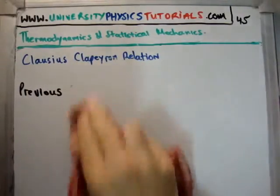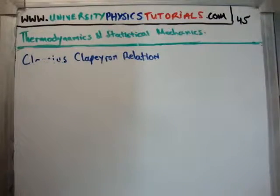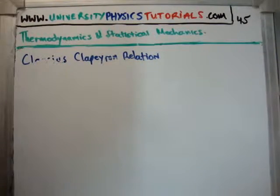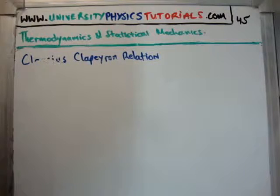The Clausius-Clapeyron relationship relates entropy and volume, and that's really what we're going to do.